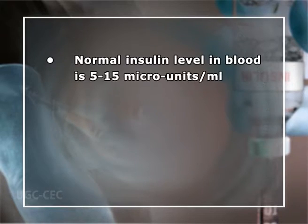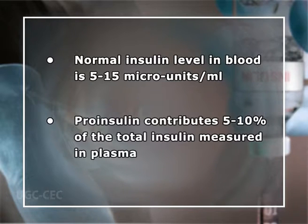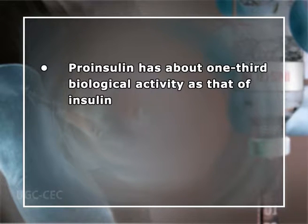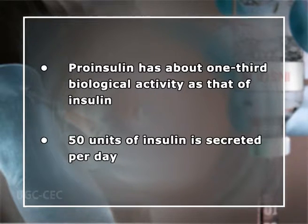Normal insulin level in blood is 5 to 15 micro-units per mL. Pro-insulin contributes 5 to 10 percent of the total insulin measured in plasma; it has about one-third the biological activity of insulin. Approximately 50 units of insulin is secreted per day. Sometimes measurement of endogenous insulin may be difficult because of the presence of antibodies against insulin in the circulation.